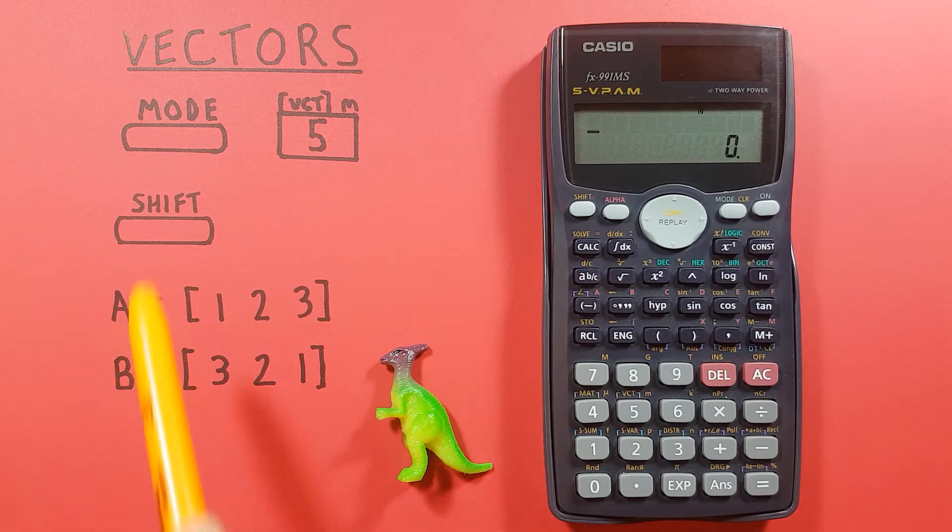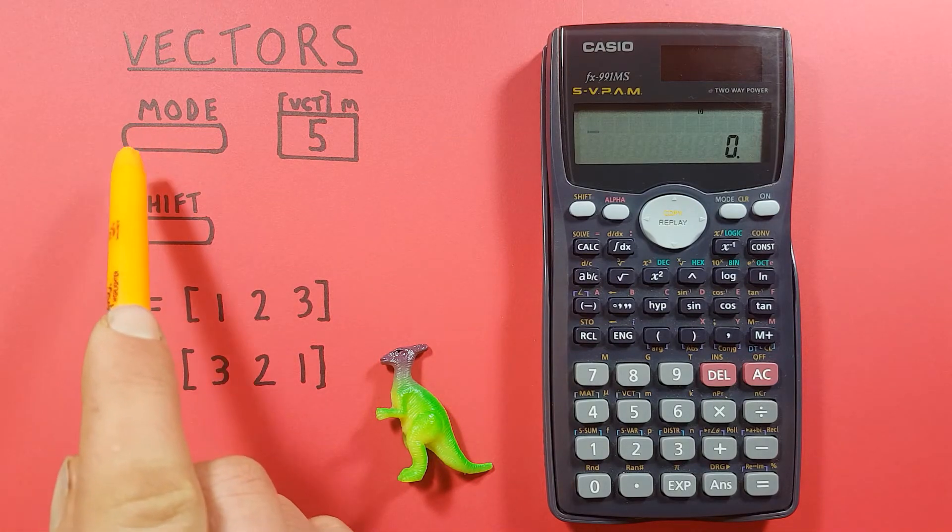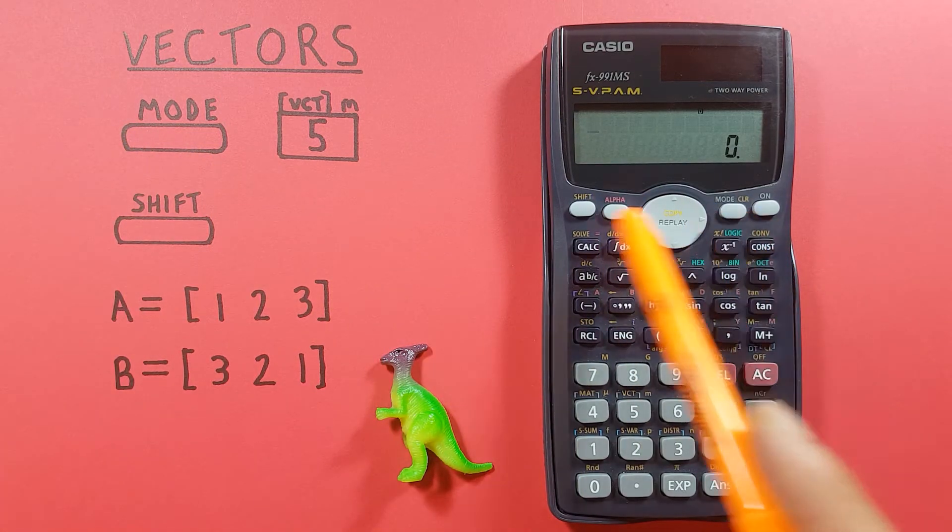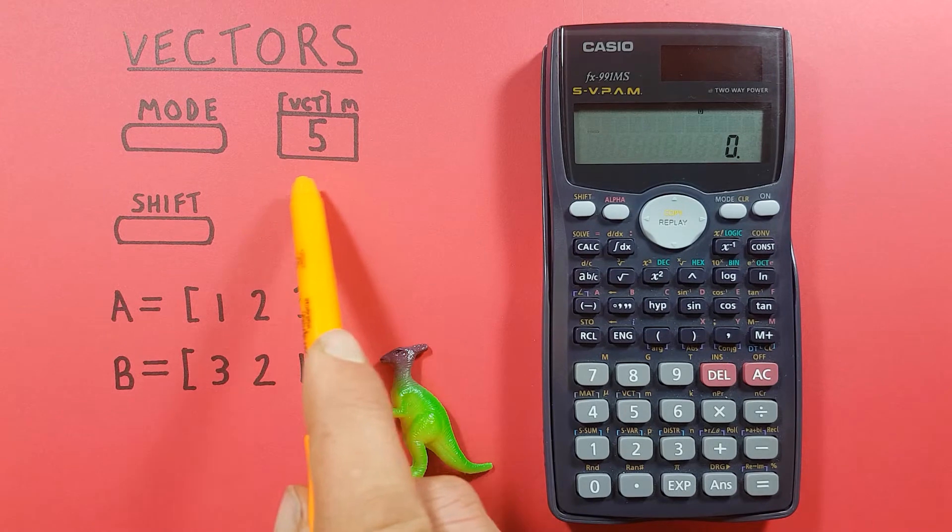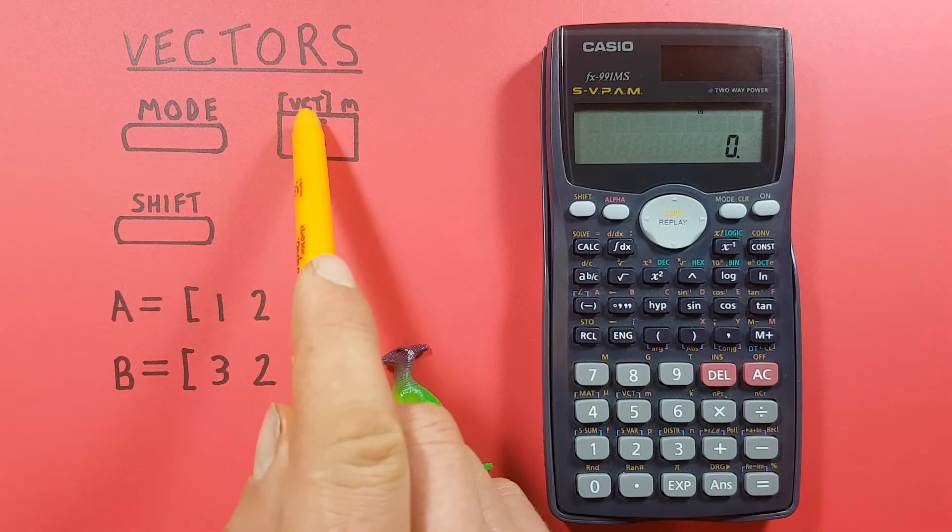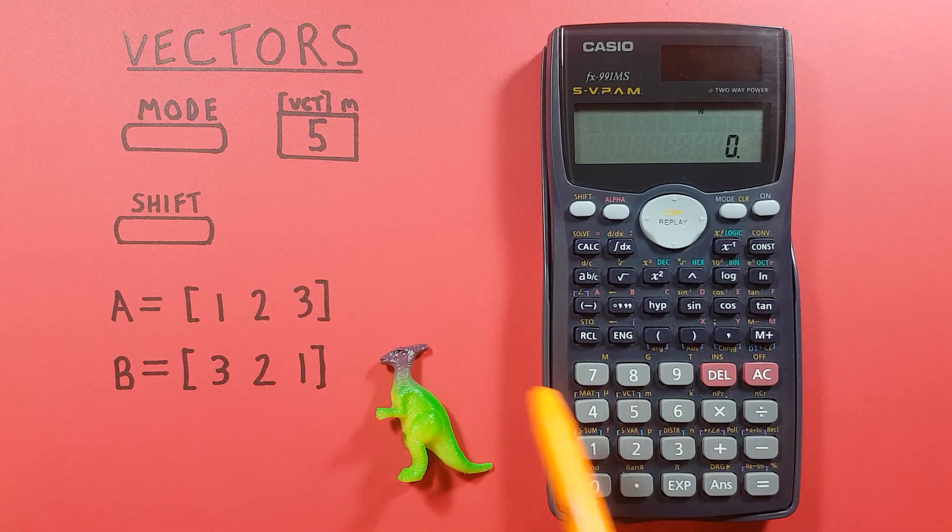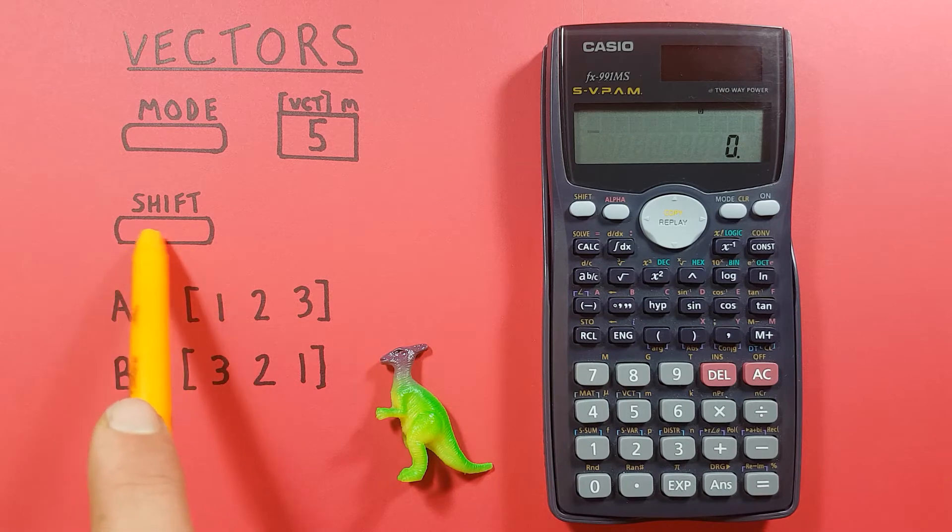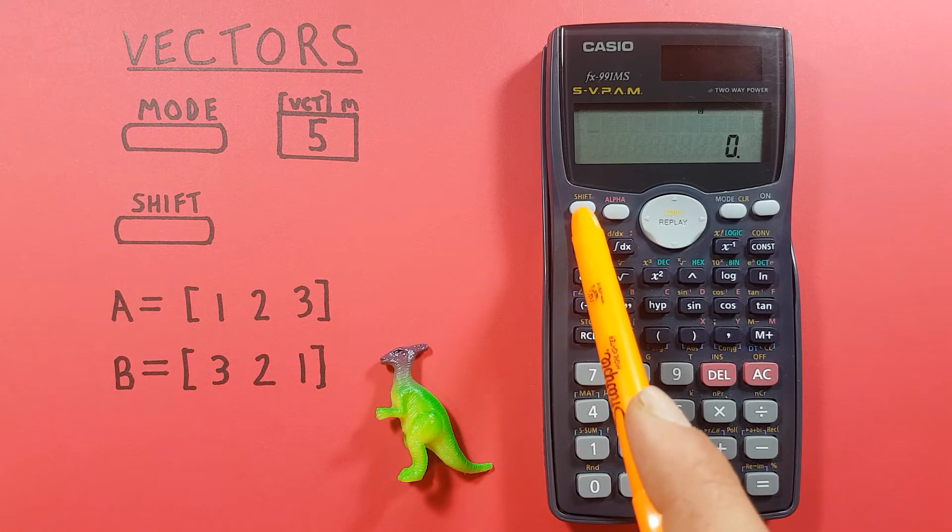To do this we'll be using the mode key that looks like this located here, the 5 key with a shift function of VCT or vector located here, as well as the shift key that looks like this located here in the top left.